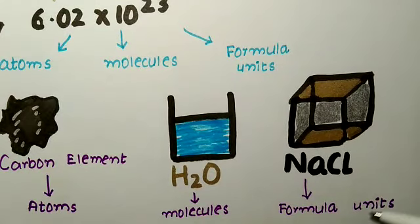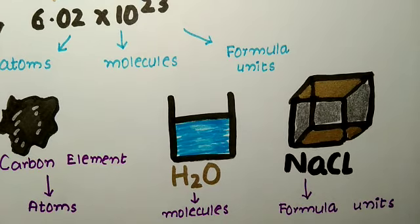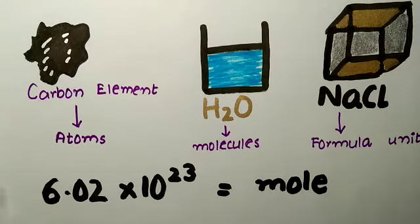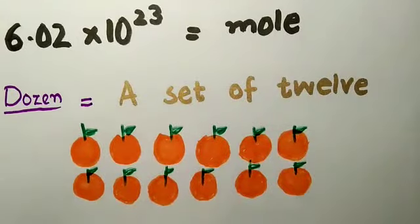For NaCl, the formula unit is used. If we want to find how many atoms are present, we use the formula unit to find the number of atoms. To help understand this, I will give you an example of a dozen — a set of twelve.